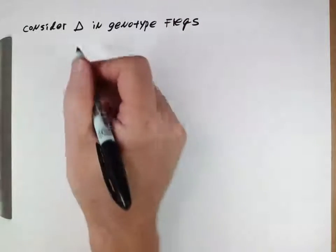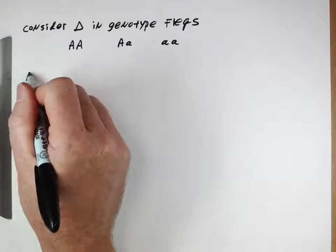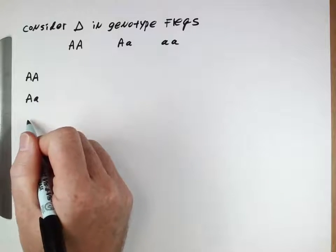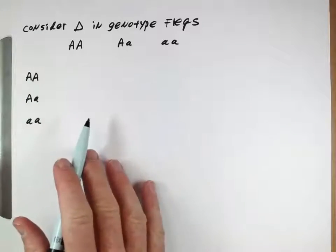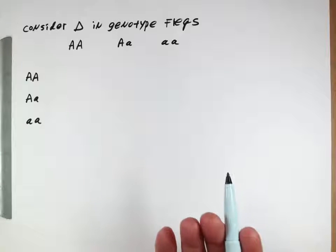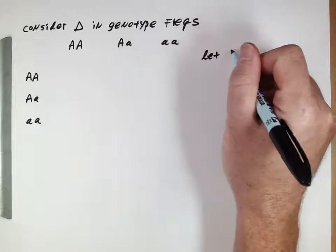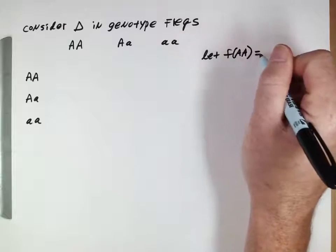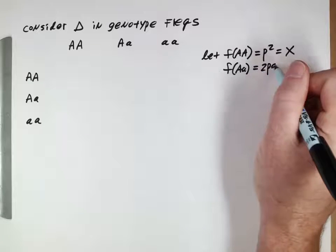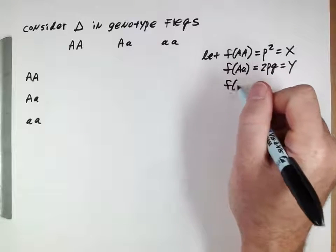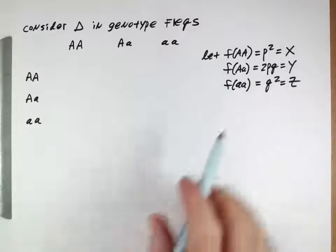Evolution is all about change. So let's think about a population of individuals with each of our three genotypes, and we're going to have this population reproduce. Individuals are going to randomly pair up with other individuals and produce offspring, and then we'll calculate the frequencies of the alleles after one generation. To simplify things, we'll let the frequency of each genotype — which we know is p squared — be represented by x, the frequency 2pq by y, and q squared by z.